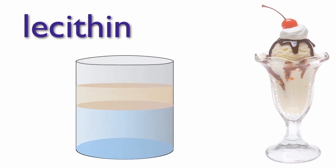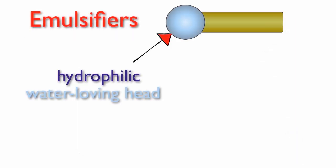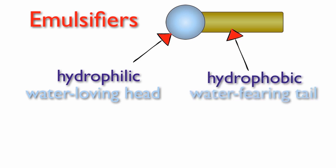All emulsifiers have two components: a hydrophilic or water-loving head and a hydrophobic or water-fearing tail.